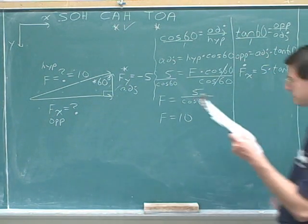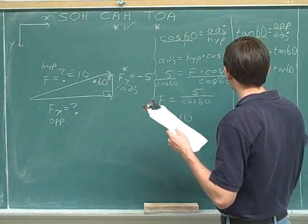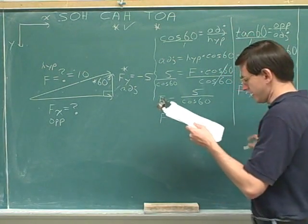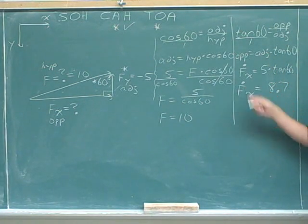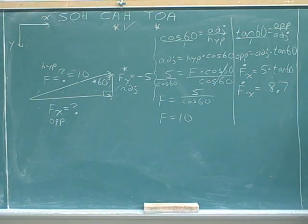F sub x, this is still just the magnitude with a dot, is 8.7. I'm not going to put a sign here because this is just the magnitude. The trig function doesn't tell me the sign.